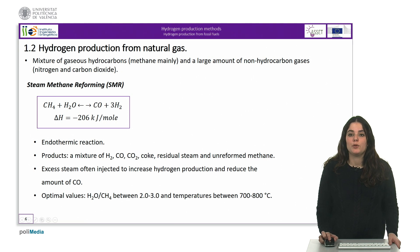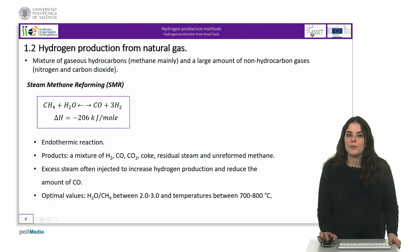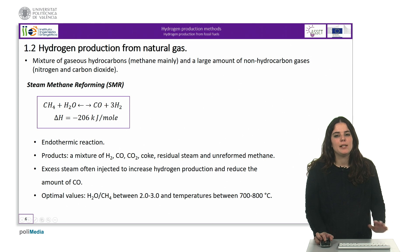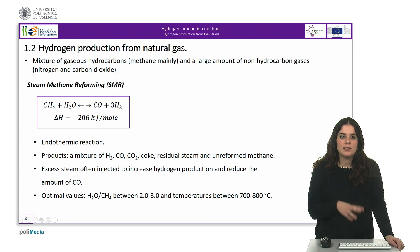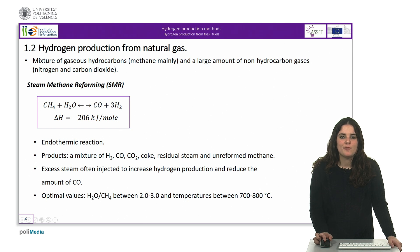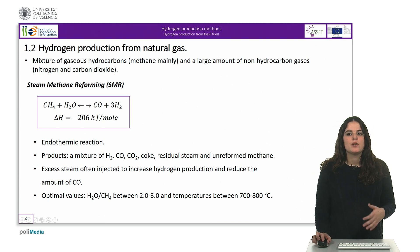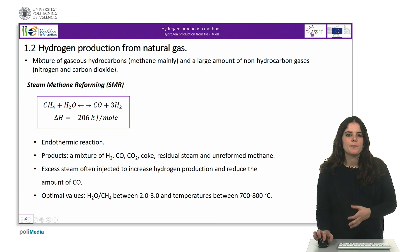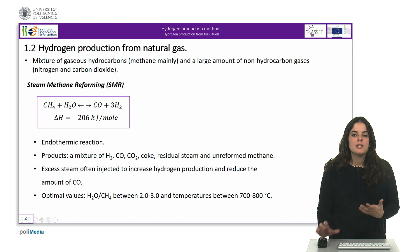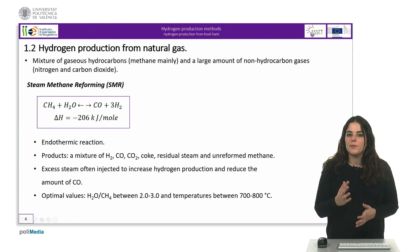The optimal conditions for a steam methane reforming process are temperatures between 700 and 800 degrees Celsius and a steam-to-methane ratio between 2 and 3. Under stoichiometric conditions, the conversion rate is maximum for high temperature and relatively low pressure. Excess steam is often injected to increase hydrogen production and reduce the amount of CO produced. Moreover, if the reforming reaction is carried out in the presence of CO2 absorbers, the temperature of the reaction can be reduced considerably, achieving the same conversion of methane into hydrogen and a higher purity of the hydrogen produced. Alternative processes are currently being studied, such as reforming with membranes, with which the energy consumed can be reduced by 10%.